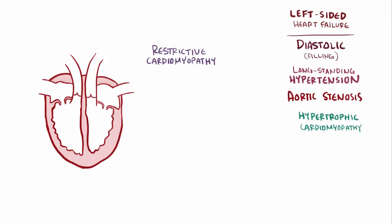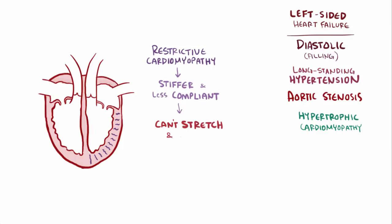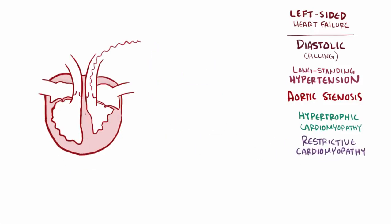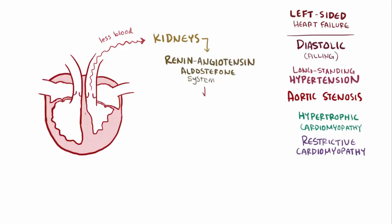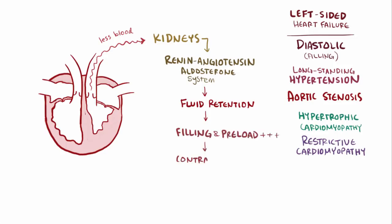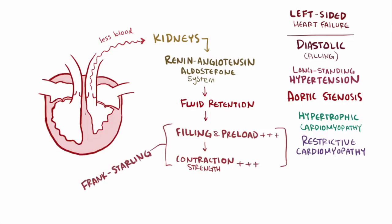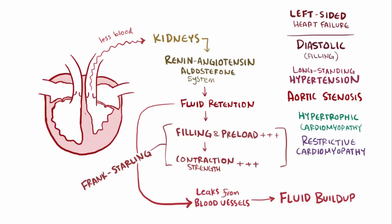Restrictive cardiomyopathies are yet another cause. In this case, the heart muscle gets stiffer and less compliant, and therefore the left ventricle can't easily stretch out and fill with as much blood, which leads to diastolic heart failure. When the heart doesn't pump out as much blood, there's decreased blood flow to the kidneys, which activates the renin-angiotensin-aldosterone system, ultimately causing fluid retention, which fills the heart more during diastole and increases preload, increasing contraction strength again by the Frank-Starling mechanism. Unfortunately, in the long term, retaining fluid typically leads to a large portion of it leaking into the tissues and can contribute to fluid buildup in the lungs and other parts of the body, worsening the symptoms of heart failure.